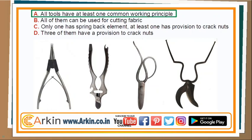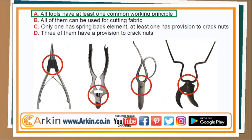Option A: All tools have at least one common working principle. Here you can see all tools are working with a hinge — two sides are getting closed or open around the hinge. So the statement holds true. All tools have at least one common working principle, and all tools are used for cutting something.